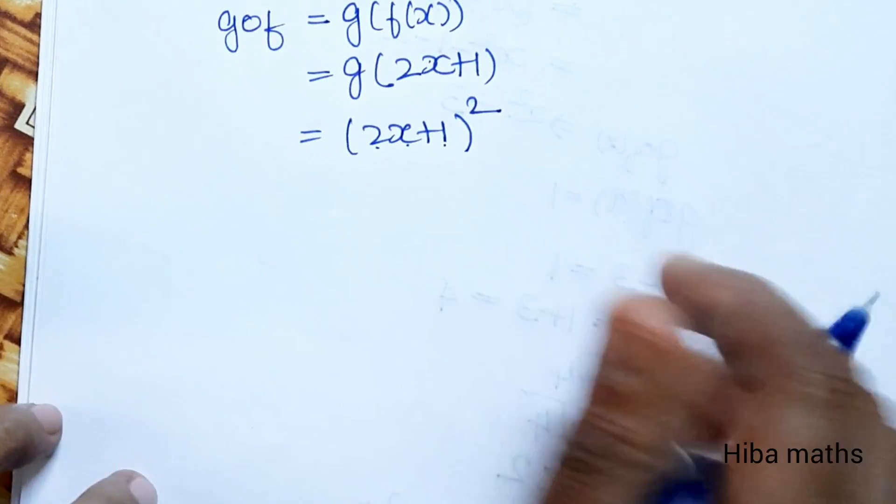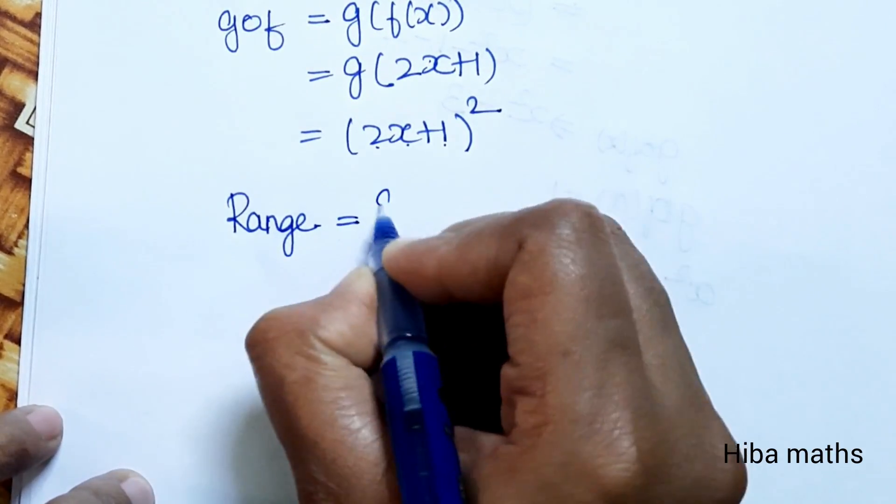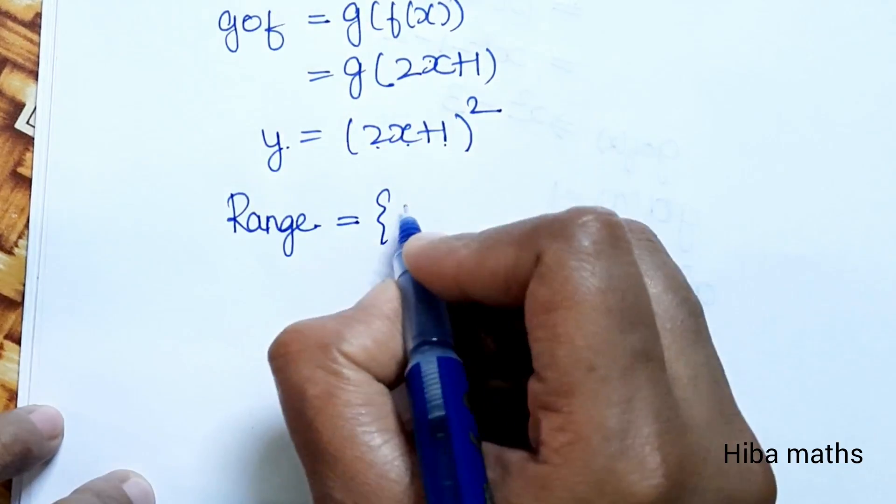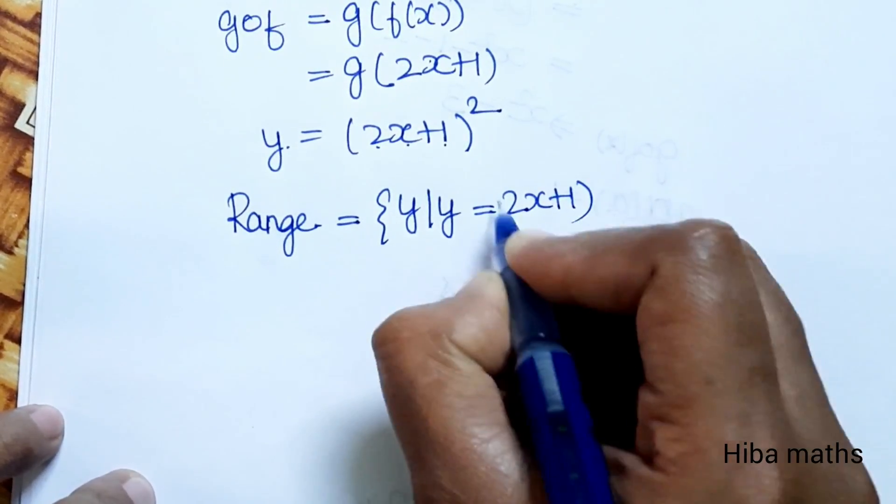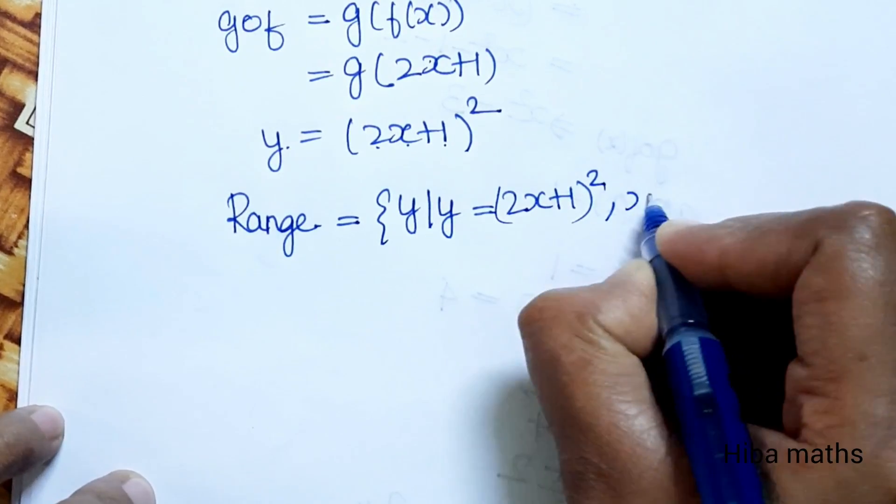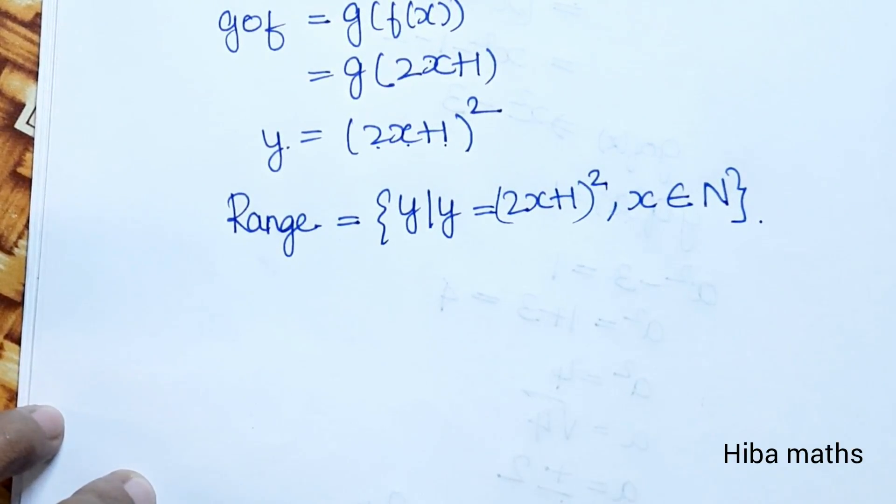This is the answer. Therefore, the range is {y | y = (2x+1)², x ∈ ℕ}. This is our answer.